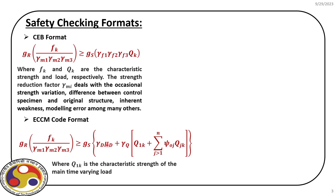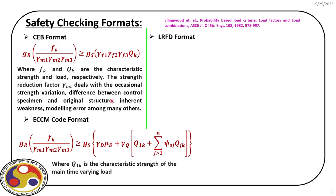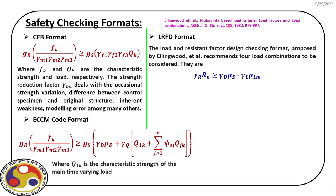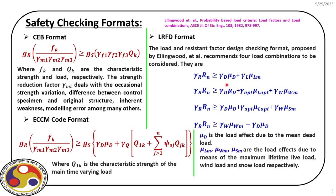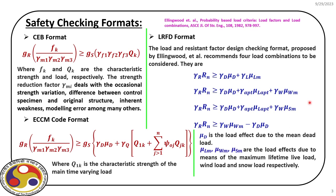Similarly, we have other formats. One of the most popular is the LRFD — Load Resistance Factor Design — format, first proposed by Ellingwood in a paper published in the ASCE Journal of Structural Engineering; those interested can refer to that paper. In this format there are four equations. The first equation is γᵣ times Rₙ, where we consider the nominal resistance multiplied by the associated factor, and that should be greater than the mean dead load effect and mean lifetime maximum live load effect. Similarly, we consider mean dead load effect and all other load combinations, including lifetime maximums of live load, wind load, and snow load.